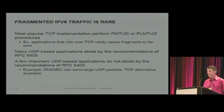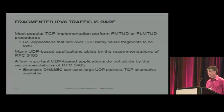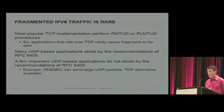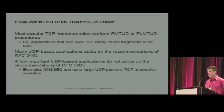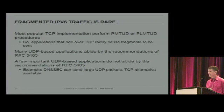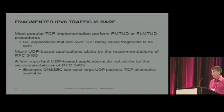Let's discuss operational reality. On the Internet today, IPv6 fragmentation is extremely rare. Most popular TCP implementations already do PMTU discovery or PLMTU discovery, so TCP applications rarely emit fragmented IPv6 packets. Many UDP-based applications abide by the recommendations of RFC 5405 — they either send short packets or discover the path MTU. There are a few important exceptions: we know that DNSSEC can send large UDP packets, though it does have a way to fall back on TCP. But if DNSSEC is an exception, there are likely other exceptions waiting to be discovered.